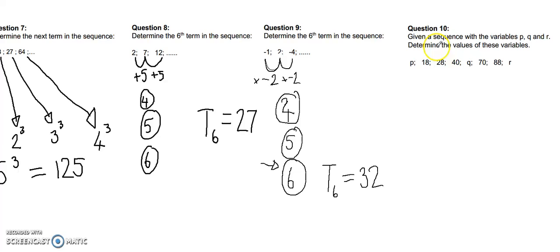The last question now. Given a sequence with the variables p, q, and r, determine the values of these variables. Now this question I actually found in a grade 11 paper, but I just liked it so much that I thought you would be great at it. Now to get from p to 18, we don't actually know how we're doing that, but from 18 to 28, it looks like we're adding 10. From 28 to 40, it looks like we're adding 12. From 40 to q, we don't actually know. From q to 70, we also don't actually know, but from 70 to 88, we're adding 18. We don't know what's happening between 88 and r. Now at first this does look a bit impossible. We can see that it's increasing by 2 over there, but we don't know what's happening over here and here. But here's the trick.